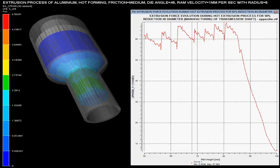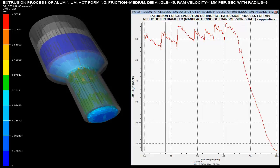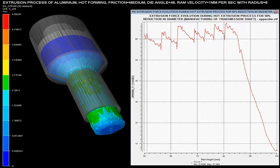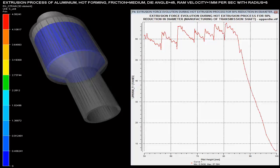Extrusion forces with respect to the billet height are shown on the graph. These forces are maximum when there is a sudden change in the cross-sectional area of the billet. As the billet height reduces, the force required for extrusion is increased.